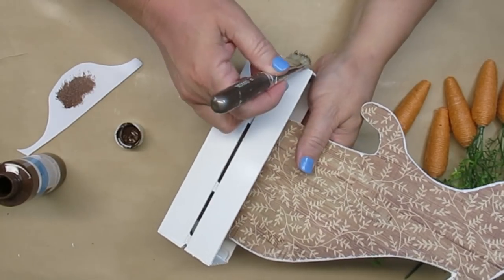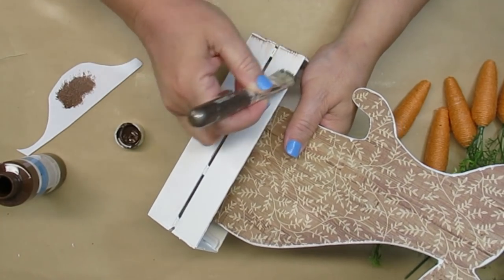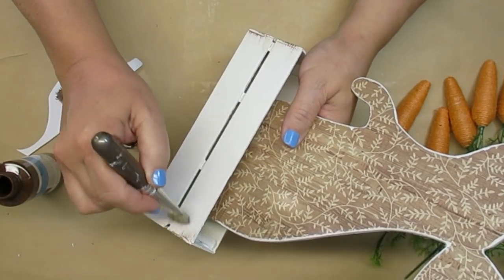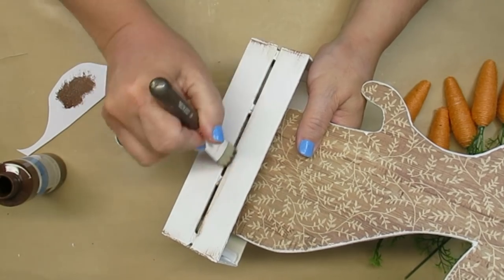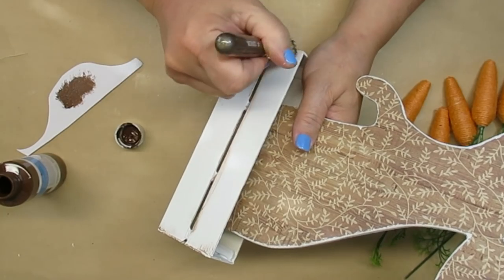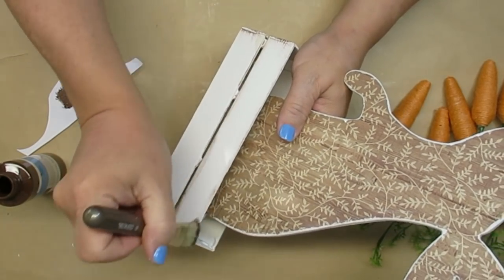To distress the crate, I'm using a little chippy brush and some burnt umber acrylic paint and I'm going to dry brush it around the edges, on the cracks, on the top and the bottom, in between the slats like you see me doing here. I just want to dirty it up a little bit so it blends in better with the color and texture of the scrapbook paper.